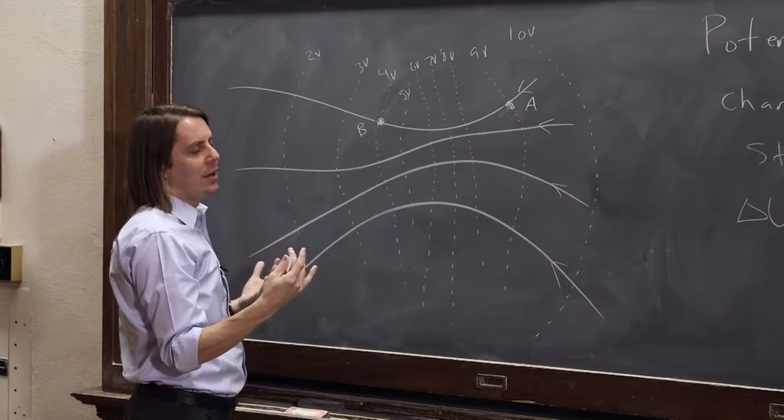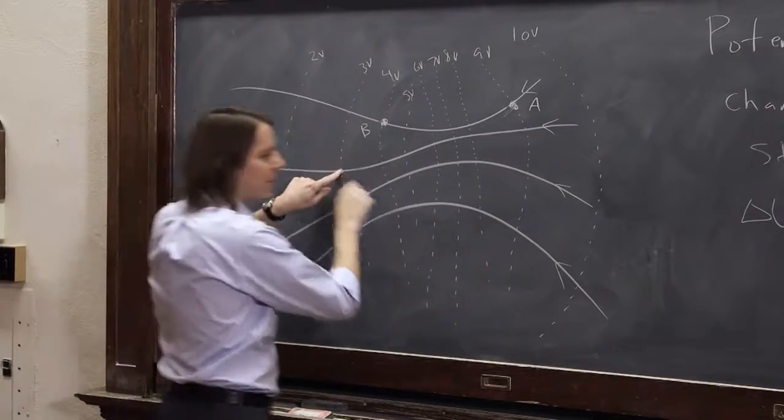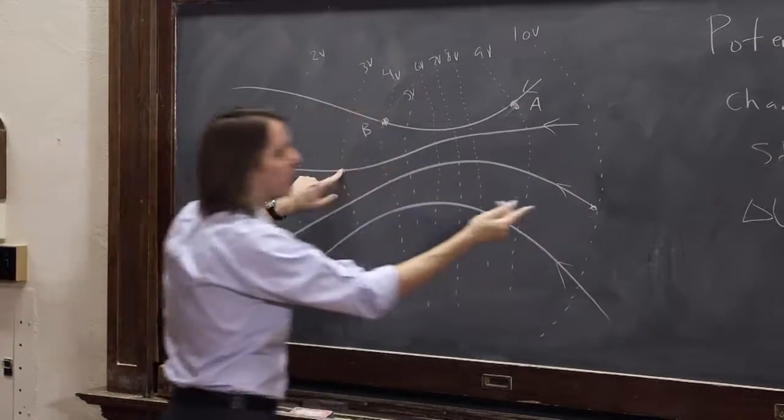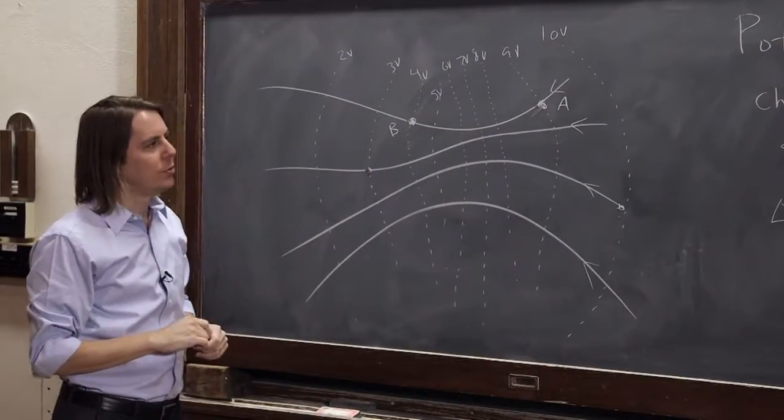So a lot of times the reason we draw these equipotential surfaces is to think about how much energy does a charge have as we move around in here. If you let one fly from A to B, you can think about how much kinetic energy it gain. If I forced one to go from here to here, how much work did I do? Well, you just look at the difference in the potential. So that's one way these are useful.